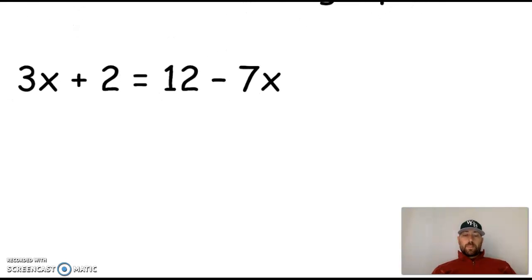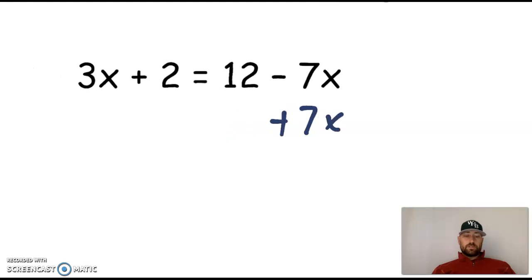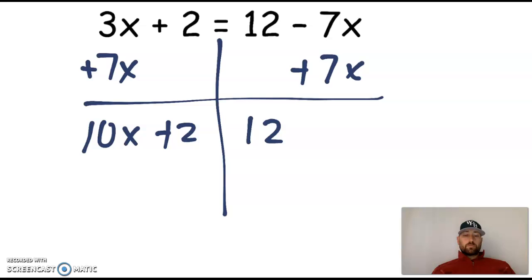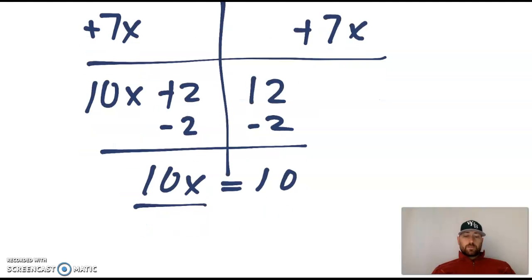So, I'm going to move this negative 7x by doing the inverse operation. All right, so after I do that, 3x plus 7x is 10x plus 2 is equal to 12. So by doing that inverse operation now, all the variables are one side of the equal sign, and I'm using inverse operations to solve. So 10x is equal to 10. Divide both sides by 10. And x is equal to 1.